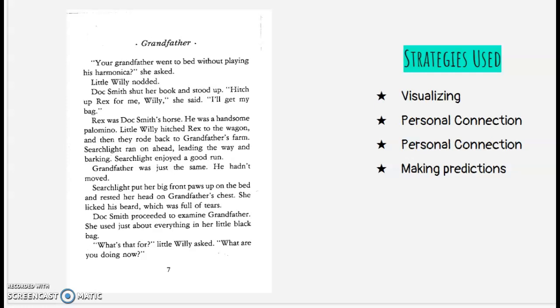On the next page, page seven, I just started visualizing Willie going to hitch up the horse and start getting things ready. And then I just thought of Searchlight again, running ahead, leading the way and barking and enjoying a good run. And it's kind of a personal connection, but also visual as well, because there were times during the summer when I'd bring my dog to school, even though he's not supposed to be here, and he would run down the hallway barking and run ahead, and then he'd look back and see if I was still following him. So I just pictured Searchlight running ahead of them and barking and having just a great time, and then looking back to see if they were still coming.